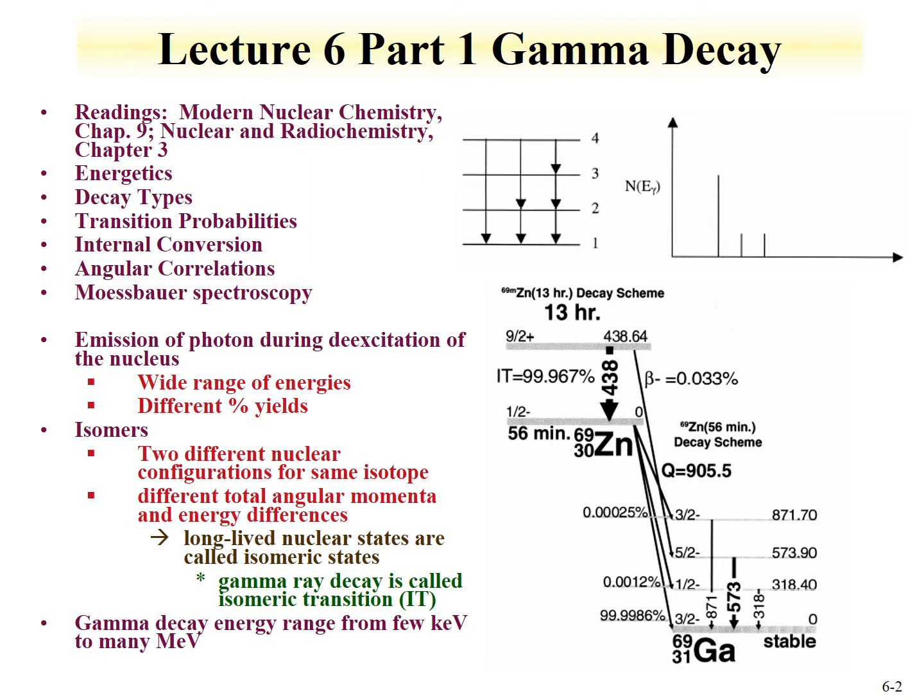Gamma decay is the emission of a photon during the de-excitation of a nucleus. There are a wide range of energies and different yields from virtually zero to 100%.